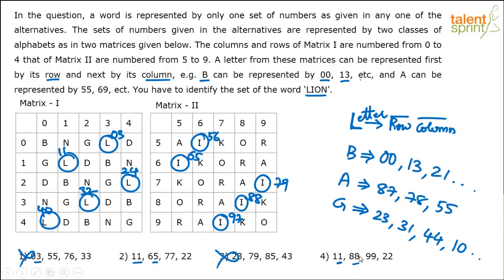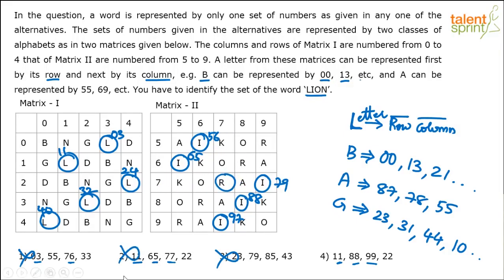Now only two options are left — option 2 and option 4. Go for O. In option 2, O is 77. In option 4, O is 99. Check what 77 is — 77 is R. So option 2 is eliminated. The only option left is option 4. So that's your answer.